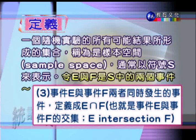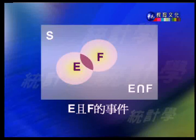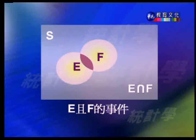第三種情形則是事件 E 與事件 F 的交集（intersection）。交集指的是事件 E 與 F 兩者同時發生，符號寫成 E∩F。從圖形來看，E 與 F 的交集是它們中間重疊的那一小部分，也就是只有在那一塊的情況發生，才說 E 發生且 F 也發生，這叫做 E 與 F 的交集。